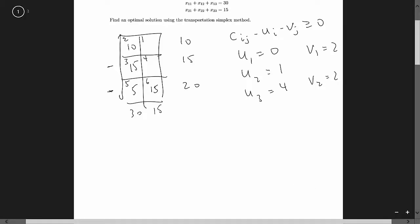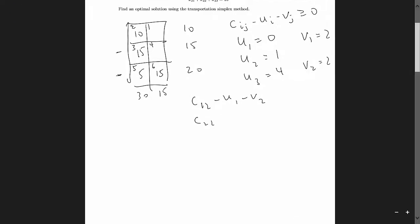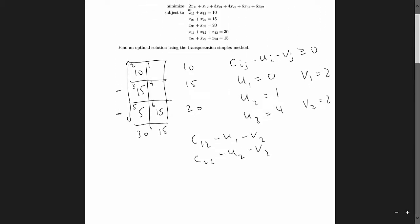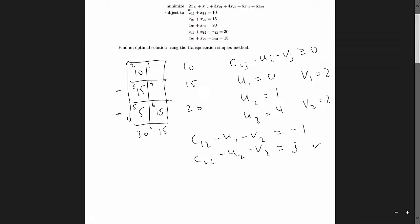Now I check the two non-basic boxes for optimality. C12 minus u1 minus v2 equals one minus zero minus two, which is negative one. C22 minus u2 minus v2 equals six minus one minus two, which equals three. The second box satisfies the optimality test, but the first does not, so we are not at an optimal solution yet.